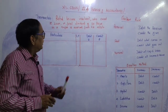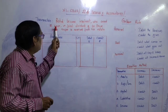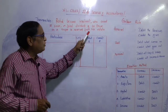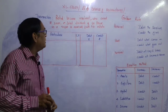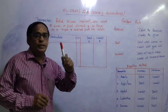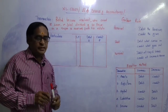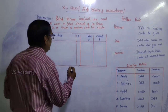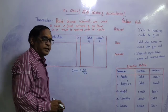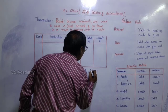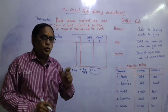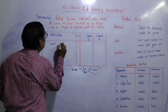Raghu becomes insolvent — meaning he is not able to pay his debts. He owed ₹2,000. A final dividend of 60 paise per rupee is received from his estate. So we can collect: 2,000 × 60/100 = ₹1,200. Only ₹1,200 will come in. According to the golden rule, debit what comes in — so cash account is debited ₹1,200.